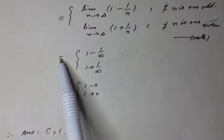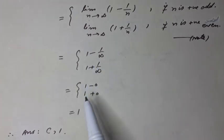So we can write it as 1 minus 0 and 1 plus 0, which is equal to 1, which is finite.